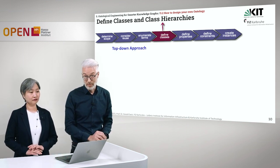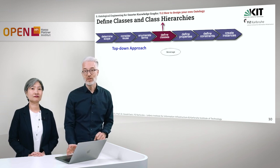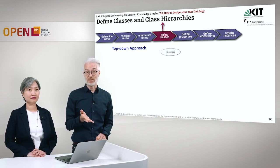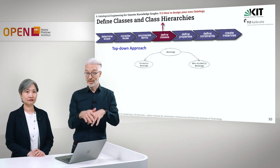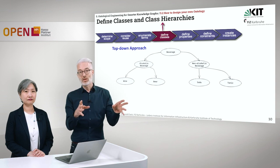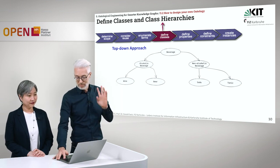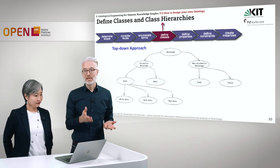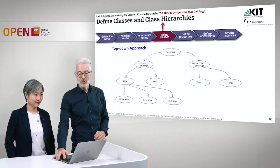There are different ways to create class hierarchies: top-down, bottom-up, or middle-out. In a top-down approach, you start with the most general concept — beverages — then distinguish alcoholic and non-alcoholic beverages, then wine and beer on the alcoholic side, and then further down white wine, red wine, and rosé wine. This creates a class hierarchy starting from the most general and moving to the specific.